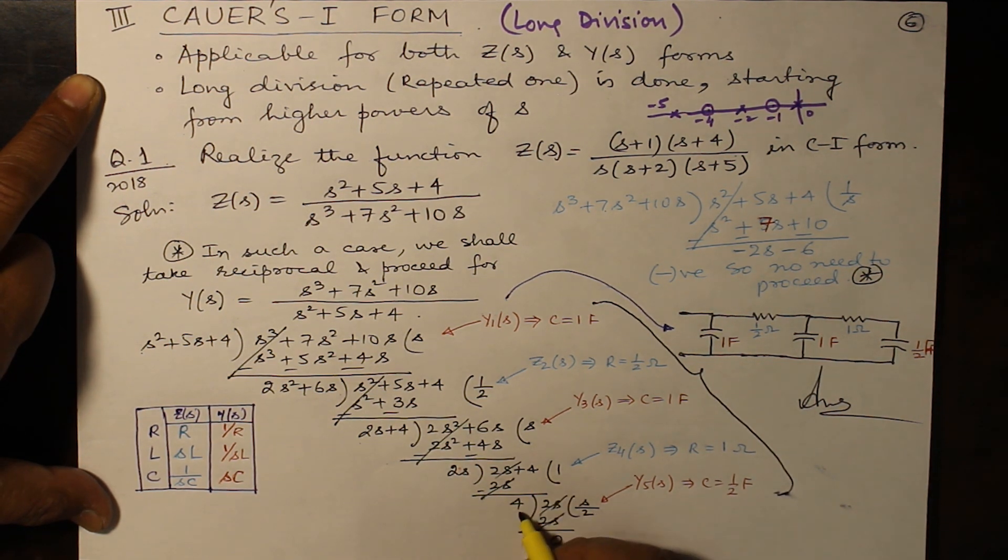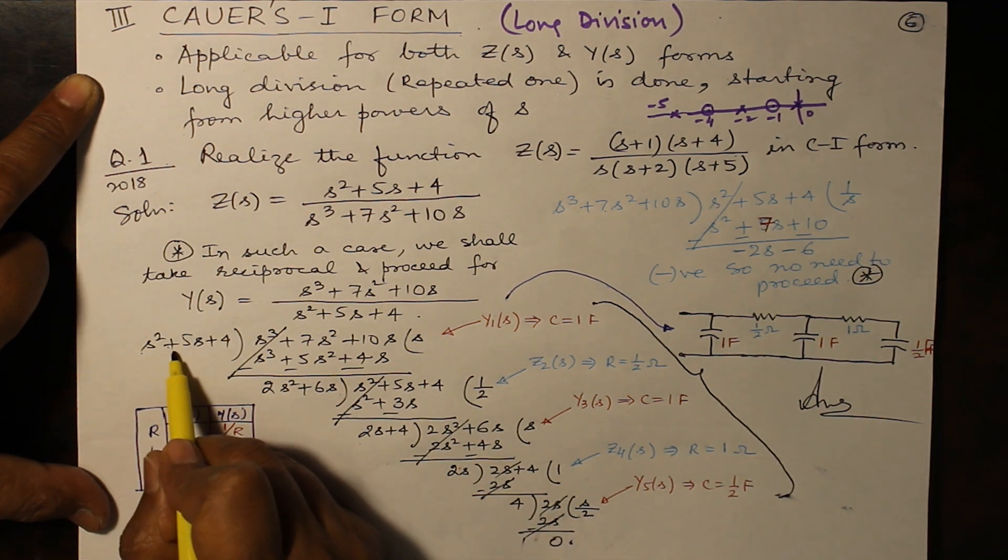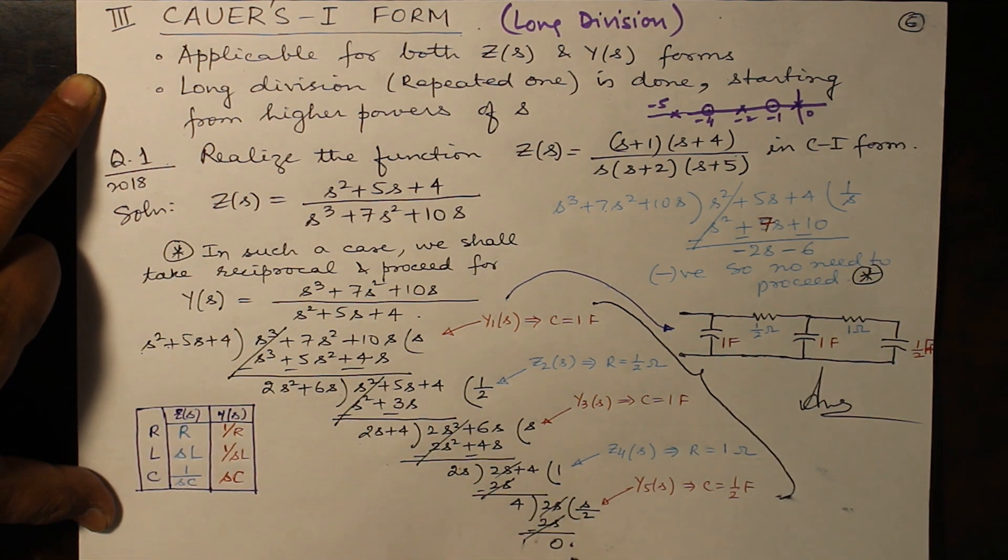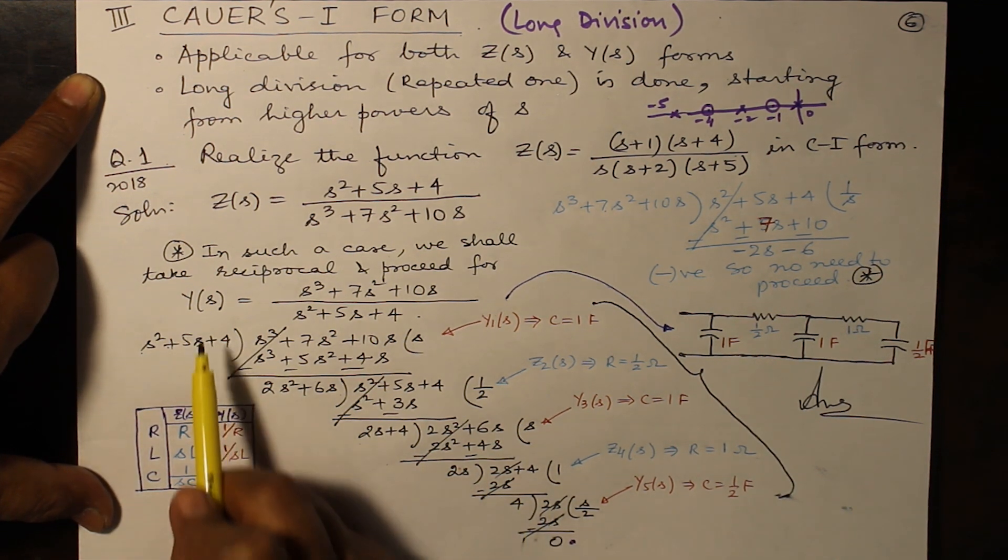This 2s + 4 comes here. So now 2s gets cancelled, 4 is left. Again 2s will come here so you multiply it by 2 and you get answer 0. So long division is to be carried out till you have 0 at the end.